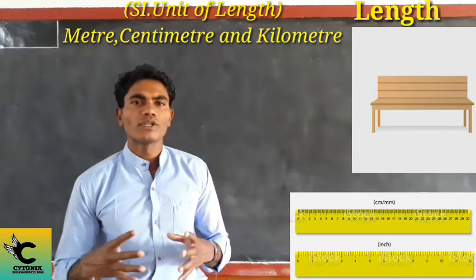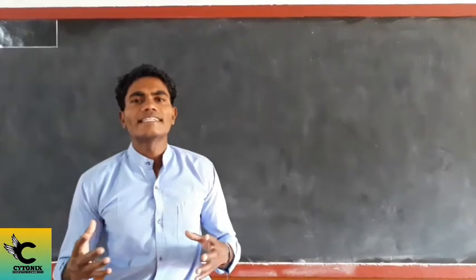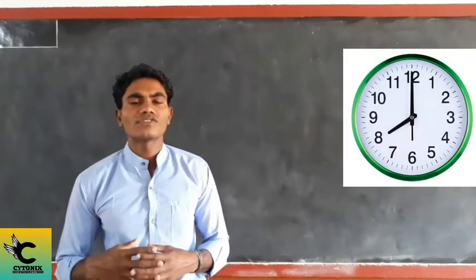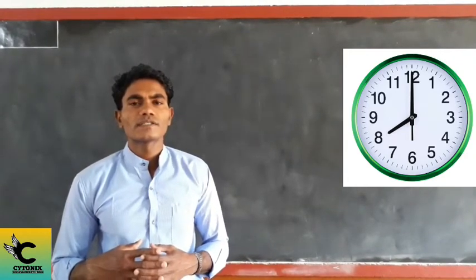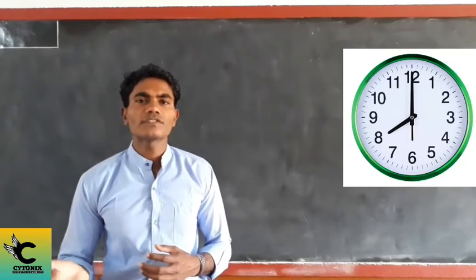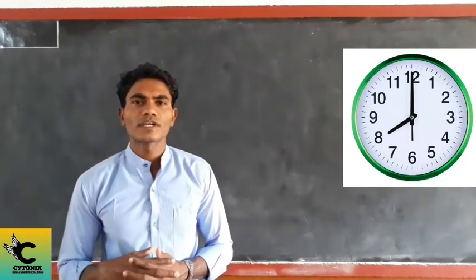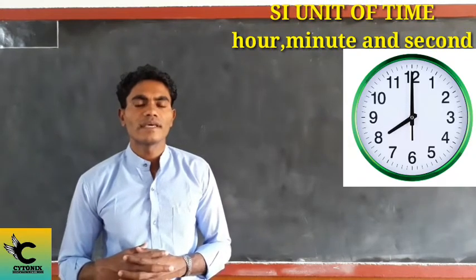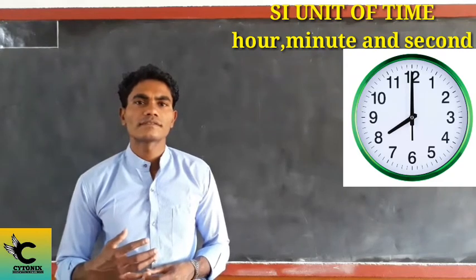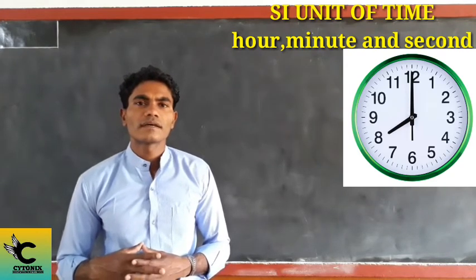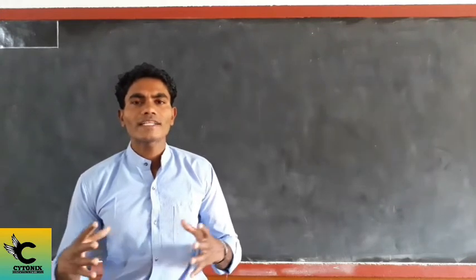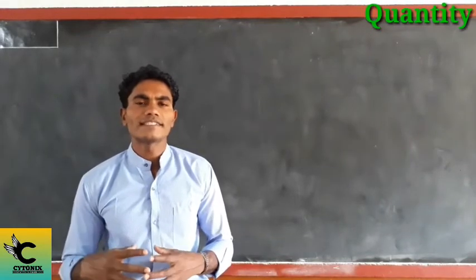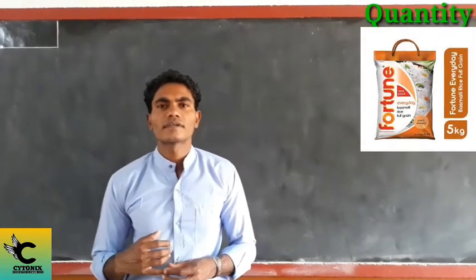Now, how do we know the time of day and night? We observe the time from morning to evening and evening to morning. The standard units for measuring time are hours, seconds, and minutes.